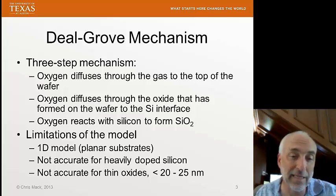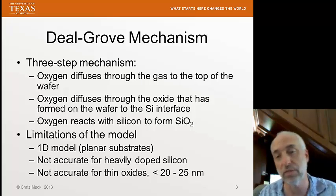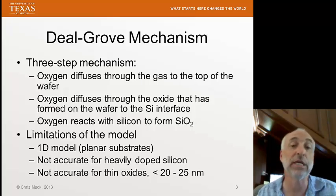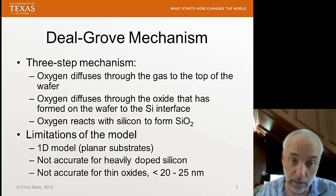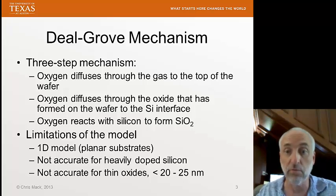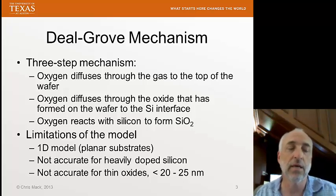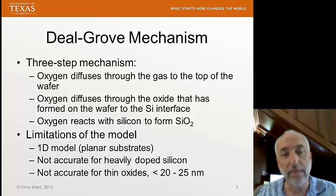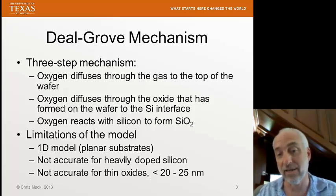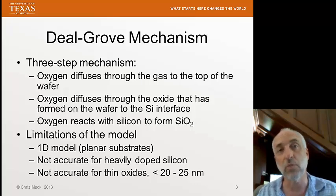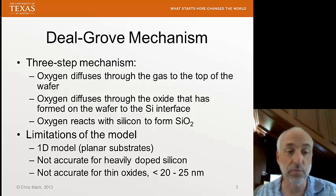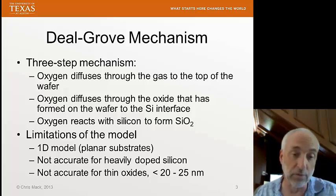This model is not accurate for heavily doped silicon, because heavy doping changes the concentration of silicon available to form silicon dioxide, which this model does not account for. It's also not accurate for thin oxides — oxide thicknesses less than about 20 or 25 nanometers. At the very end of this multi-lecture series on oxidation, we'll talk about some different models as well.